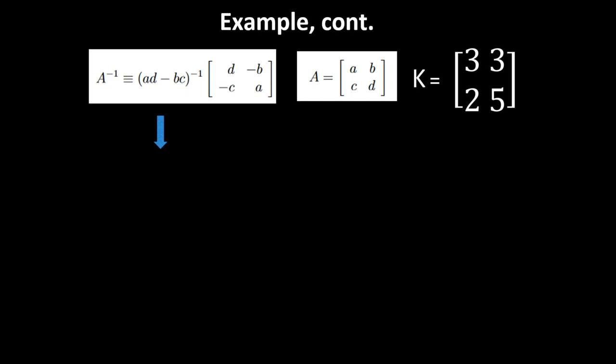We have the formula for how to calculate the inverse of A. Let's say we chose a 2 by 2 matrix K, that is [3, 3; 2, 5]. Then K inverse becomes 9 inverse times [5, -3; -2, 3]. We need to do that modulus 26.